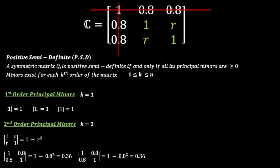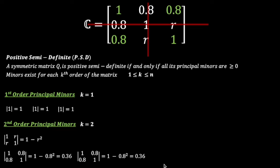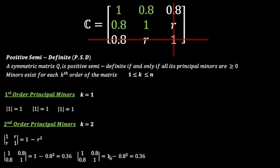For second order minors, k equals 2, so we remove one row and one column. Removing rows and columns with index 1 leaves a 2x2 matrix with determinant 1 minus r squared. Removing rows and columns with index 2 gives the matrix with elements 1, 0.8, 0.8, 1, with determinant 0.36. Similarly, removing index 3 also gives a determinant of 0.36.